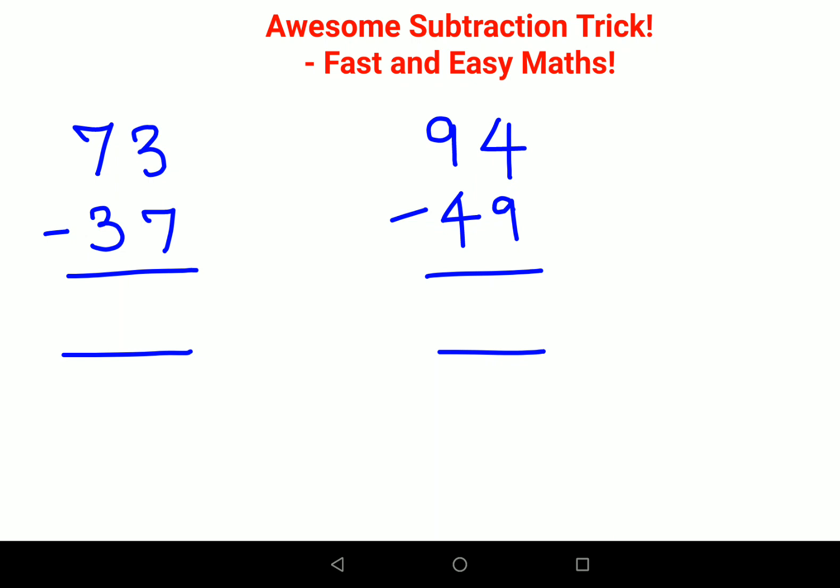If you look closely, the numbers are actually reverse of each other. We have 73 minus 37, similarly 94 minus 49. The second number is actually the reverse of the first number.